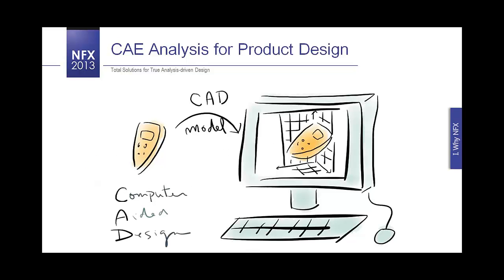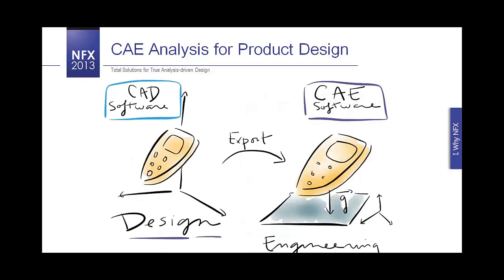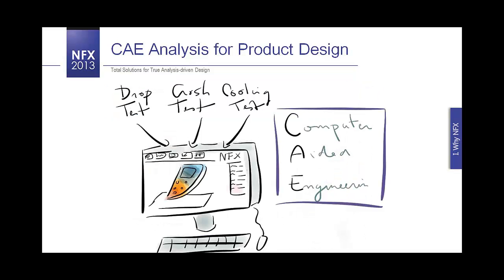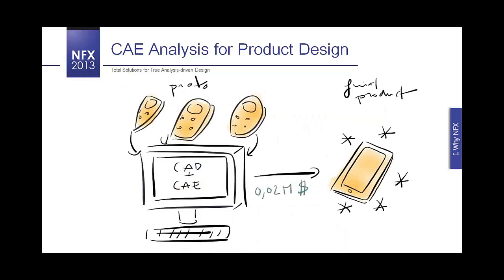Before beginning, I have one slide to explain the basics of CAE analysis. Why do we need CAE analysis? It begins with your model that you want to test — you draw a CAD model. But CAD is just a design, so you need CAE software to analyze the model and get the engineering knowledge out of it. You can perform drop tests, crash tests, cooling tests, and many other types. The advantage of combining CAE and CAD is that you can test many prototypes without losing money on laboratory tests — you get your prototype through computer testing.